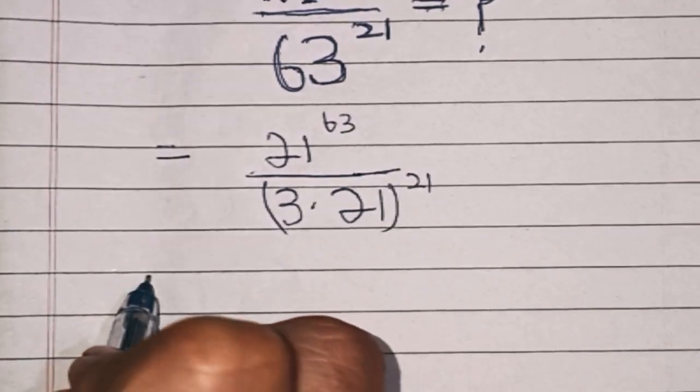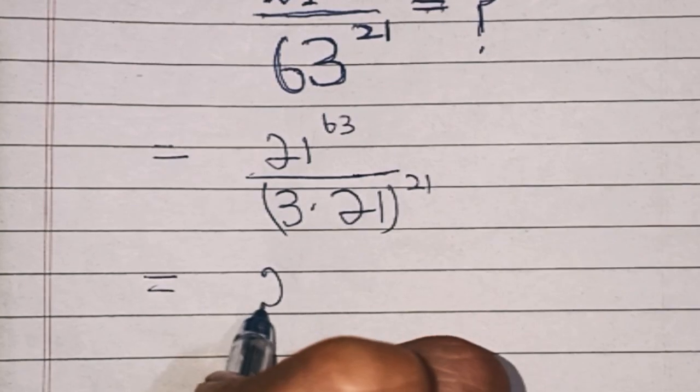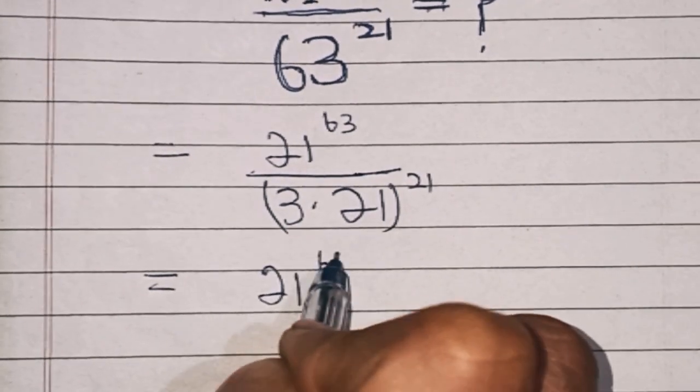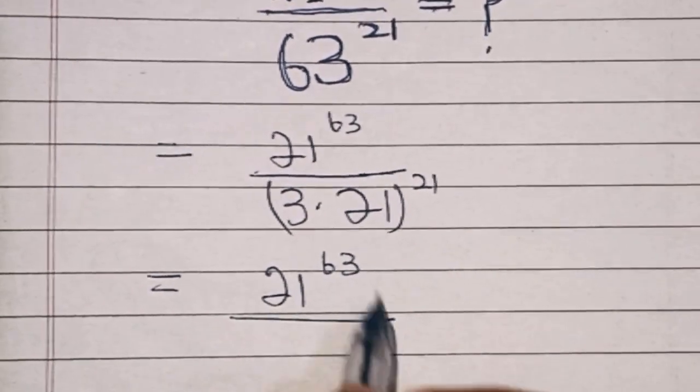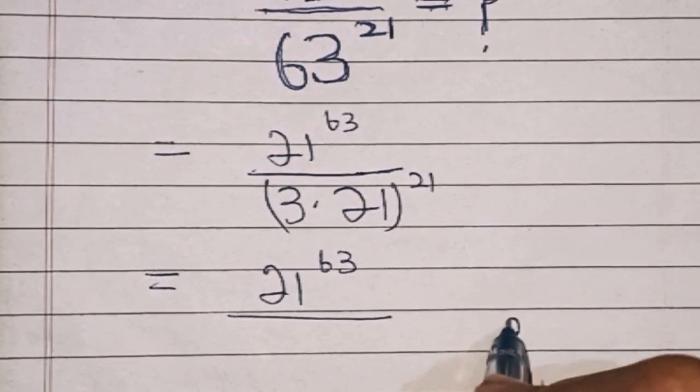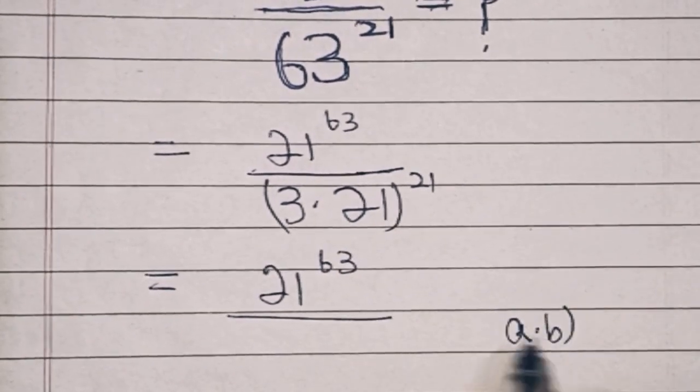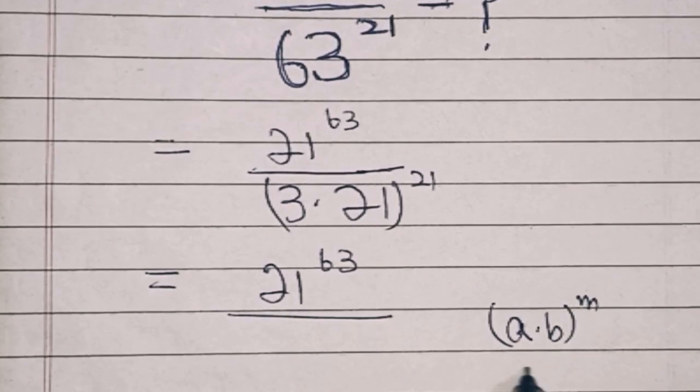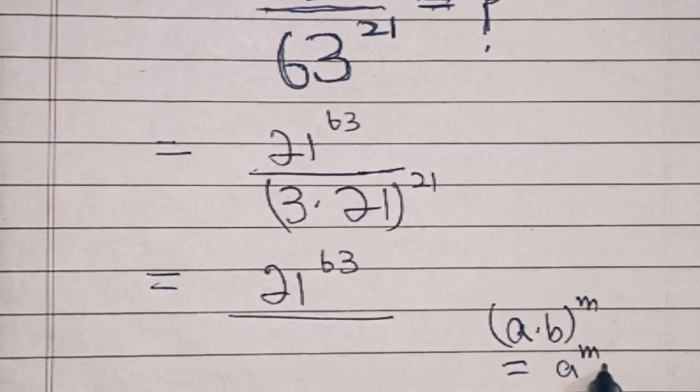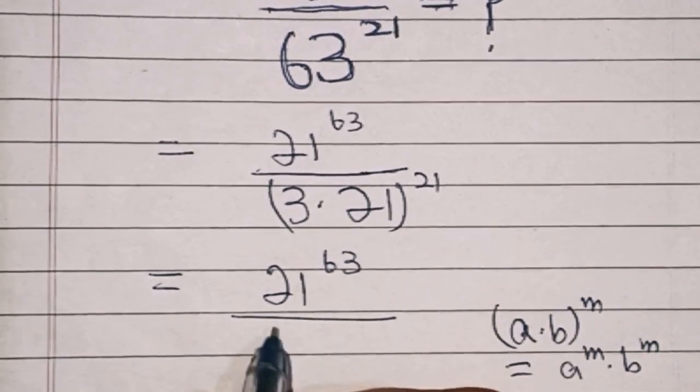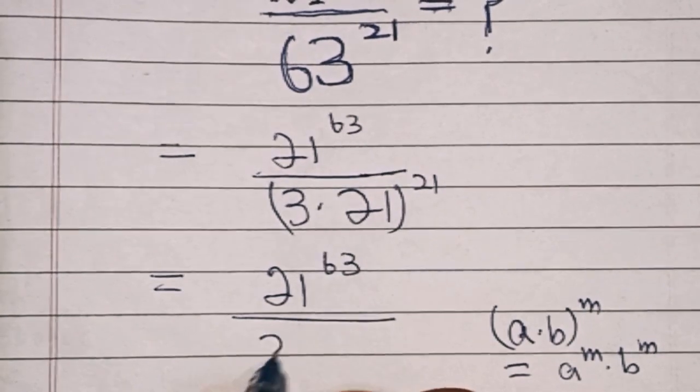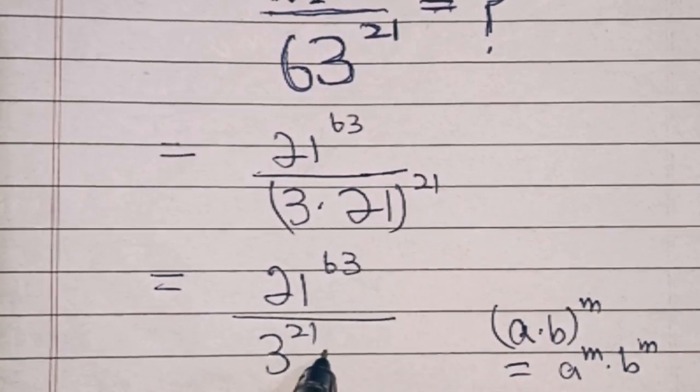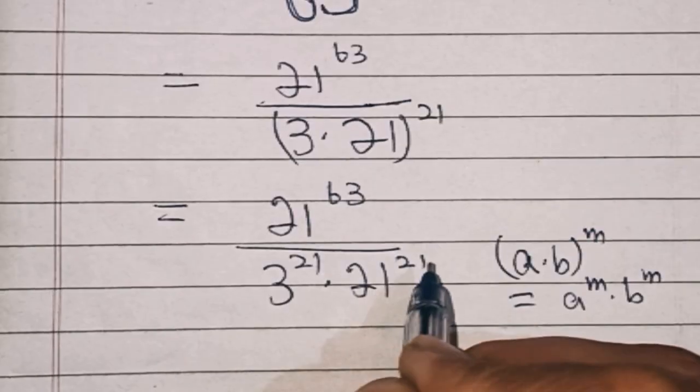Then in the next step we can write 21 power 63 over, now this expression is of the form a times b power m which is equal to a power m times b power m. So here we can write 3 power 21 times 21 power 21.